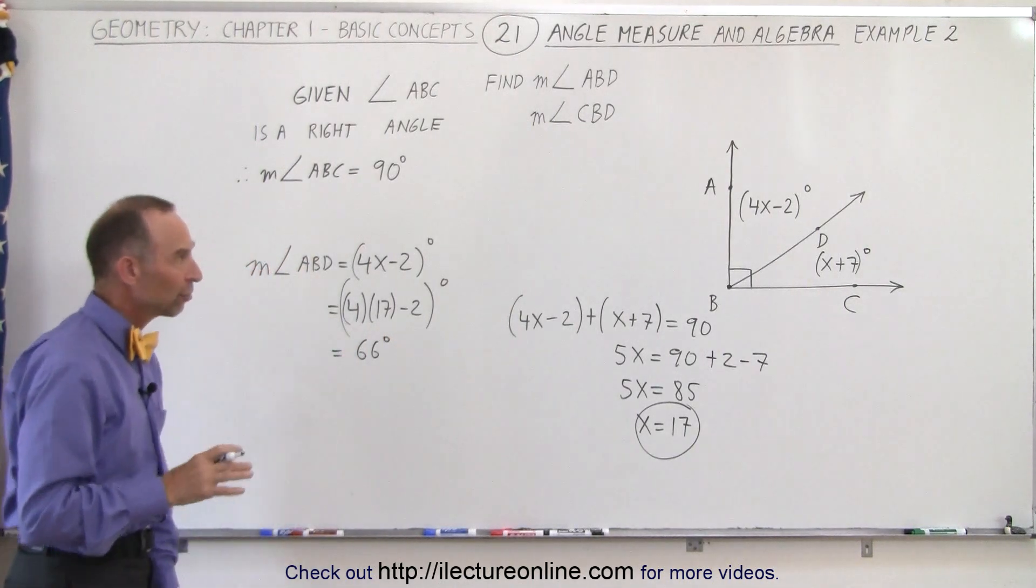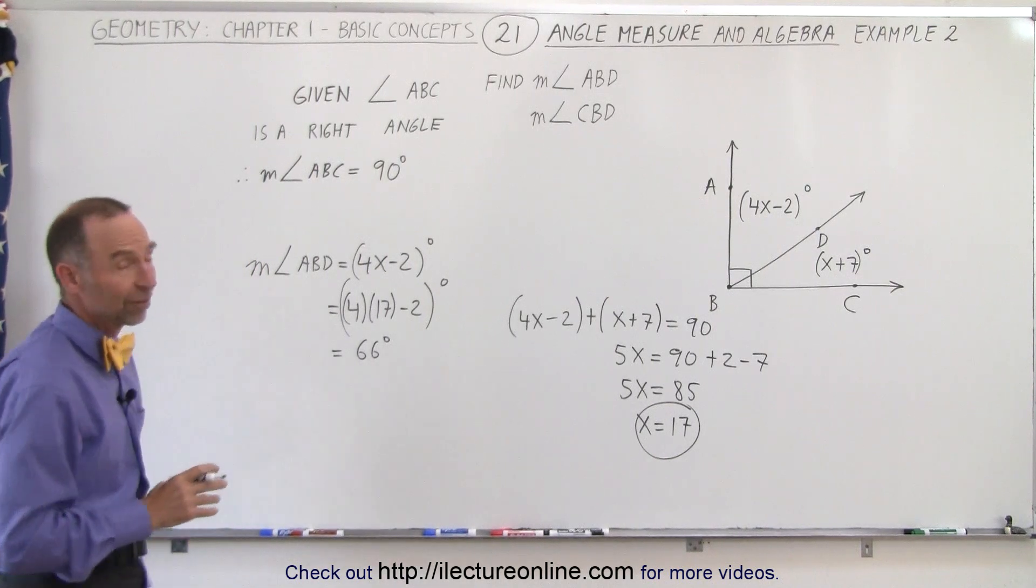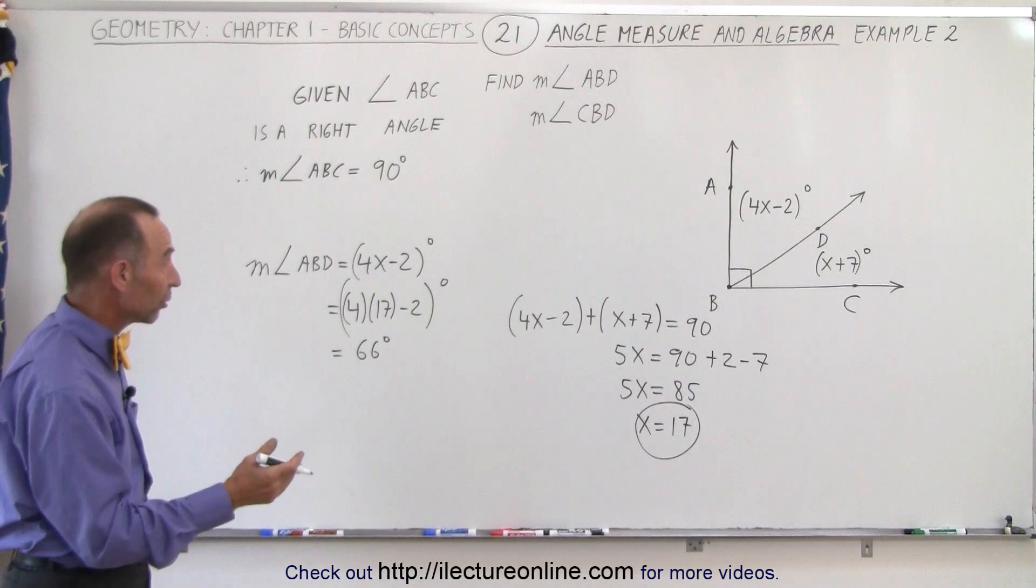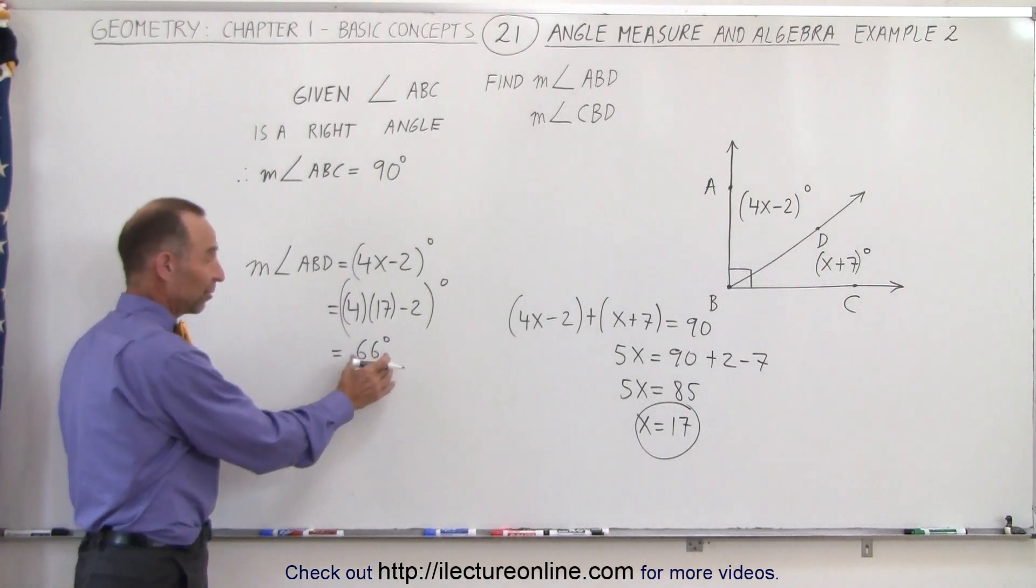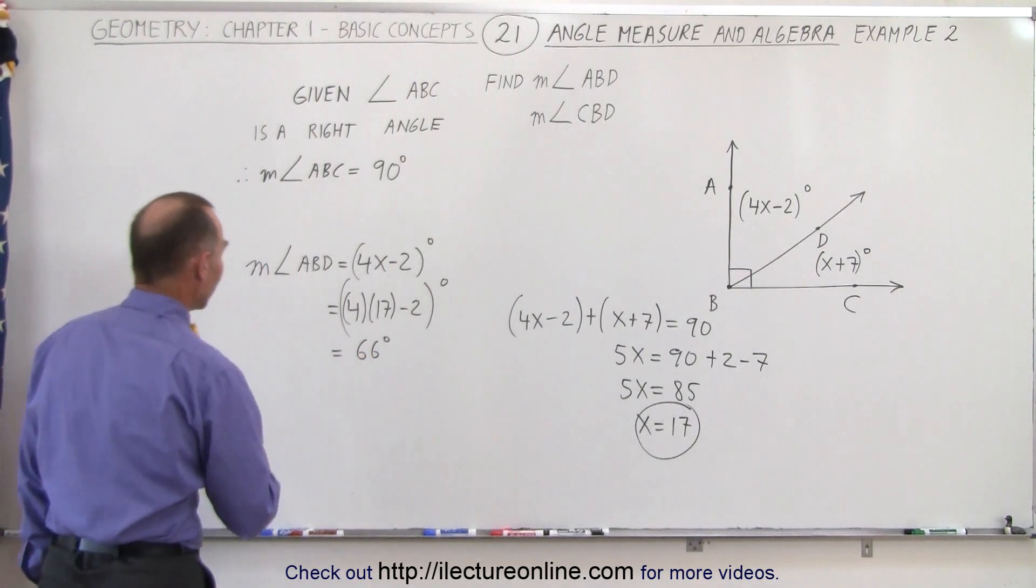So the measure of angle ABD is 66 degrees, which means that the other angle should be 24 degrees. 66 plus 24 is 90, but let's work it out and see.